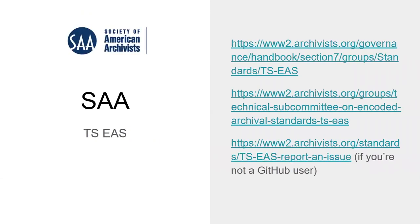It's very important that our committee ensures the development of our encoding standards happens in an international setting, which makes it especially fitting that the Library of Congress hosts the EAD website and the Staatsbibliothek zu Berlin hosts the EAC-CPF website. You can also find us on the Society of American Archivists website. The links there provide more information about our committee and how it fits into the overall structure of SAA, particularly the Standards Committee to which we report. There's also a web form on SAA's website anyone can use to provide feedback.